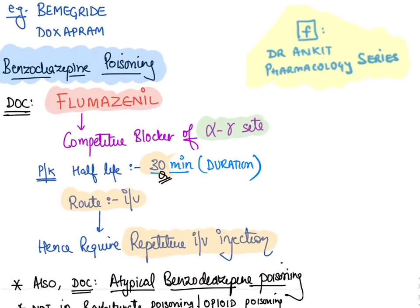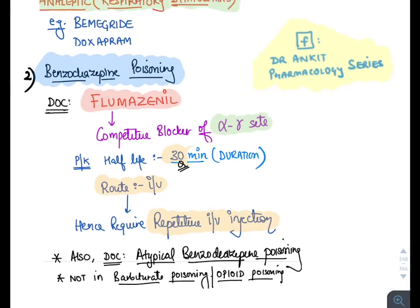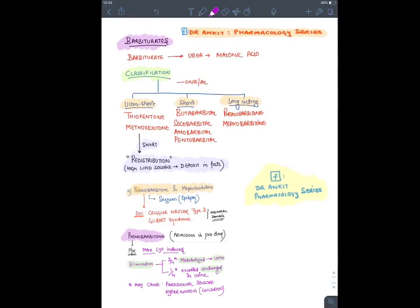In benzodiazepine poisoning, flumazenil is the specific antidote. It is a competitive blocker of the alpha-gamma subunit of the GABA-A chloride channel with a half-life of 30 minutes, so it is given as repetitive intravenous injections. Flumazenil is indicated for benzodiazepine and atypical benzodiazepine poisoning; it has no role in barbiturate or opioid poisoning.